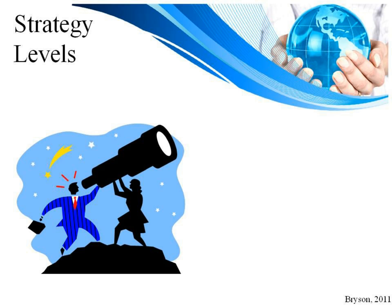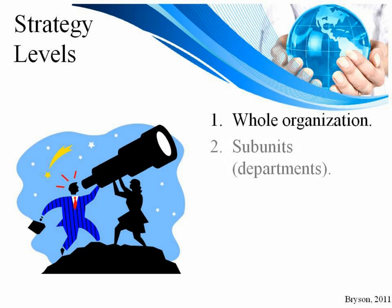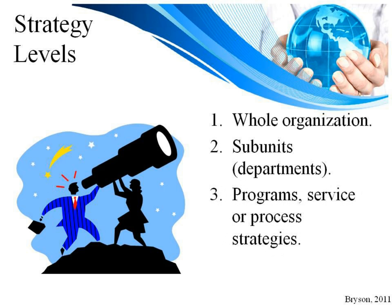There are four basic levels of strategy creation. Remember, though, that strategies aren't tactics — tactics or action items are short-term activities underneath the strategies that determine our purpose. As Mintzberg wrote in 1994, the trouble with the strategy-tactics distinction is that one can never be sure which is which until all the dust is settled. Strategy levels start at the whole organization level, then move to subunits and individual programs, service, or process strategy, and then operations — the functions that keep the organization running on a day-to-day basis.